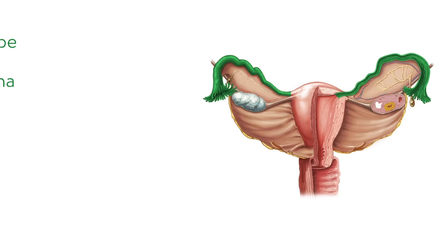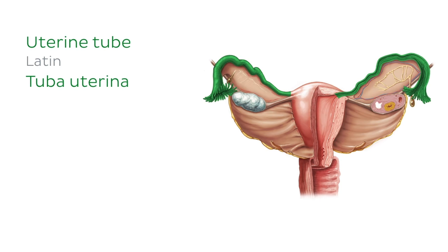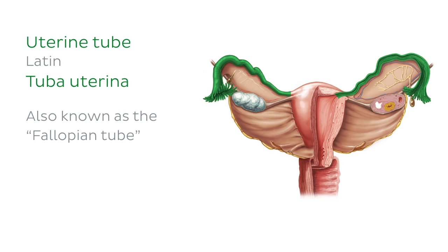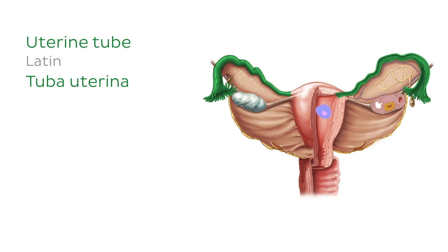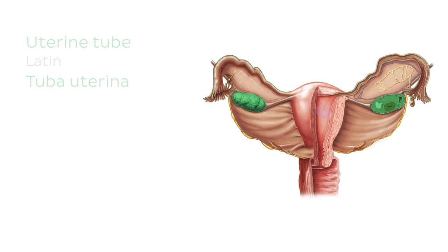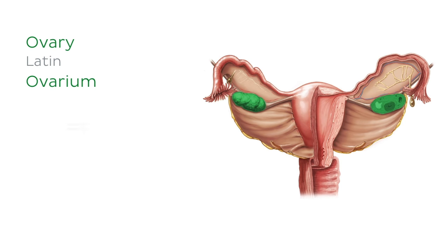Next, we have the uterine tube, also known as the fallopian tube. We have two uterine tubes, along which eggs travel from the ovaries to the uterus. Let's move on to look at the ovary, which produces and releases eggs. As you can see, you also have two ovaries.